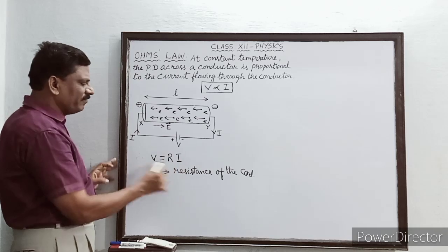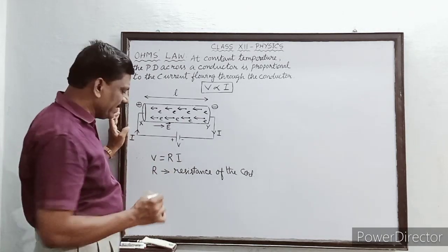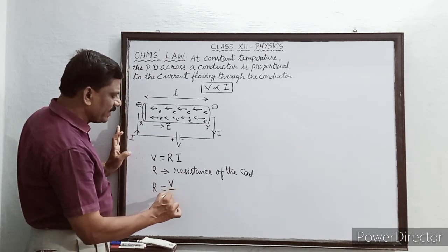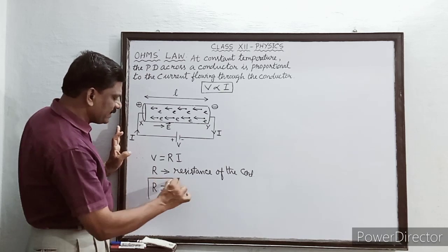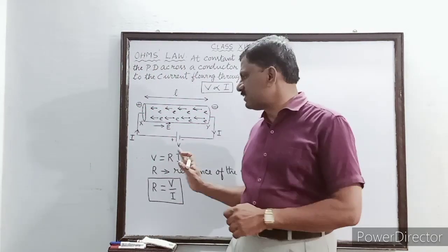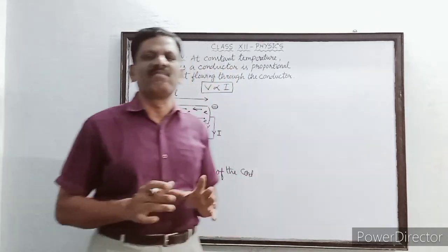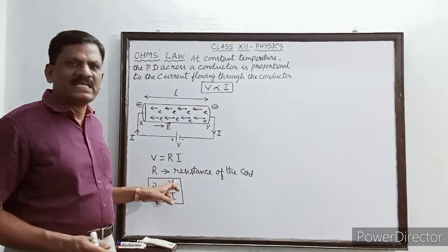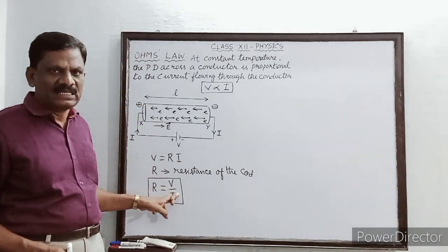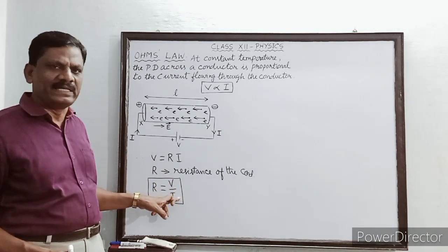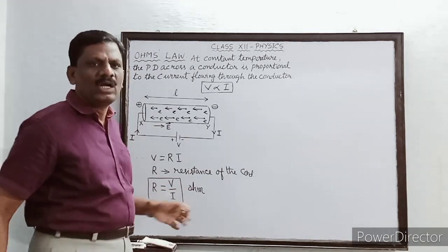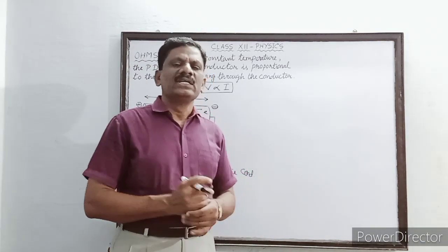From V = IR, we get the expression for electrical resistance: R = V/I. The electrical resistance of a conductor is defined as the ratio of the potential difference applied across the conductor to the current flowing through it. Its unit is volt per ampere, but the standard unit for electrical resistance is ohm.